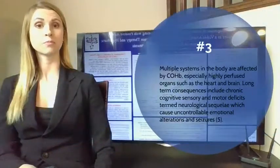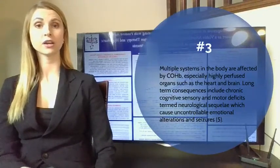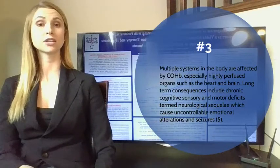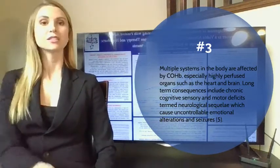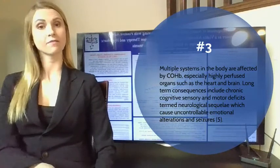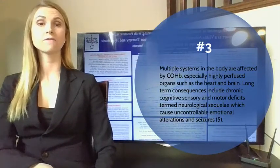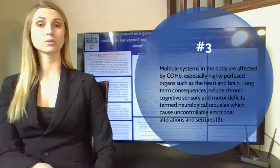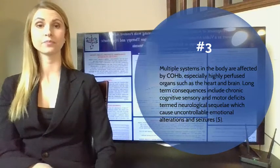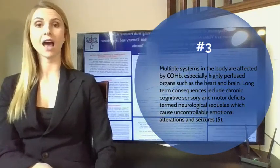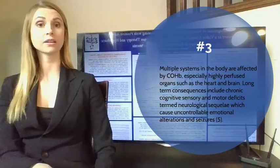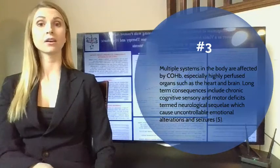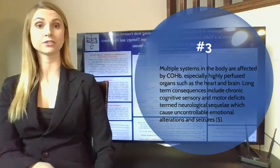Multiple systems in the body are affected by this alteration. Acute hypoxic injury occurs especially in highly perfused organs such as the heart as well as the brain. Cerebral white matter experiences inflammatory changes, demyelination, edema, and focal necrosis when the brain undergoes reperfusion and is exposed to radicals produced from highly oxygenated blood. The combination of these adverse consequences often leads to chronic cognitive, sensory, and motor deficits, termed neurological sequelae, and can cause uncontrollable emotional alterations and seizures.